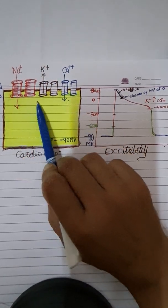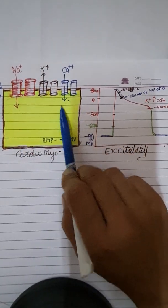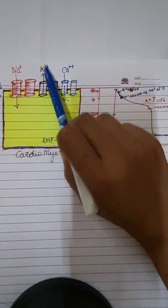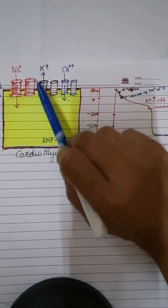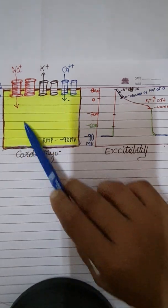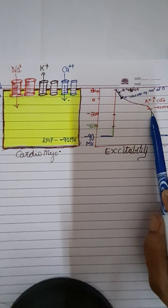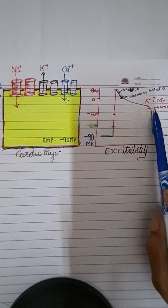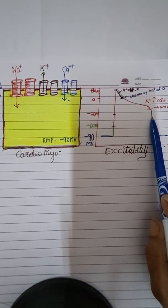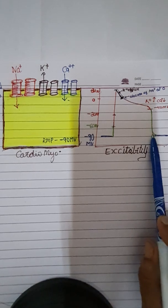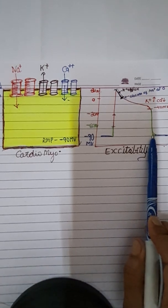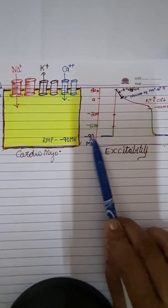There is no entry of sodium, no entry of calcium, and the positive ions or cations are moving outward. The cell is regaining its negativity and rapid repolarization occurs. The cell is attaining its resting membrane potential, which is minus 90 millivolts.